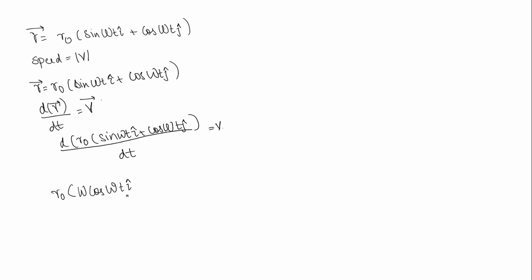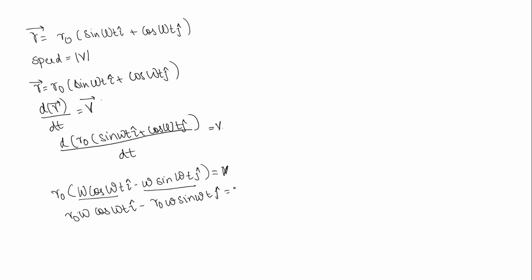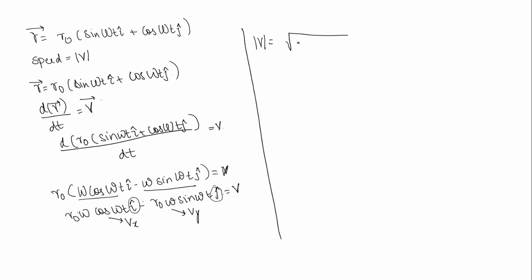The derivative of cos(ωt) ĵ gives −ω sin(ωt) ĵ. So the velocity is r0ω cos(ωt) î − r0ω sin(ωt) ĵ. The first term is the velocity along the x-direction and the second term is the velocity along the y-direction.